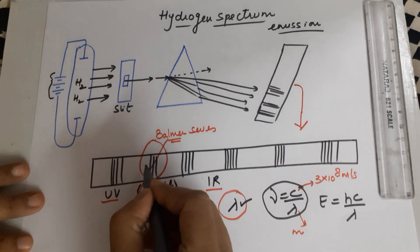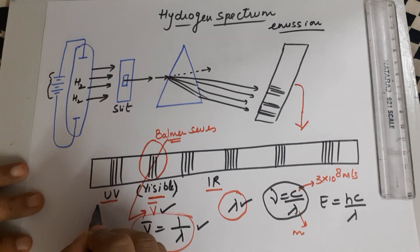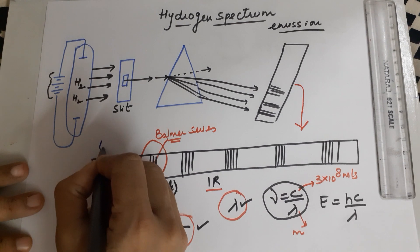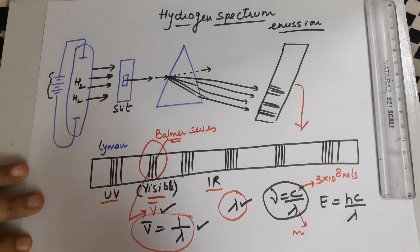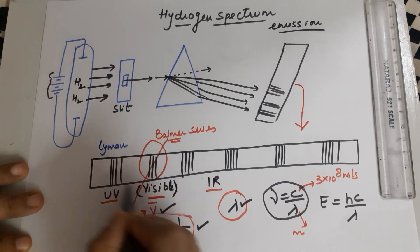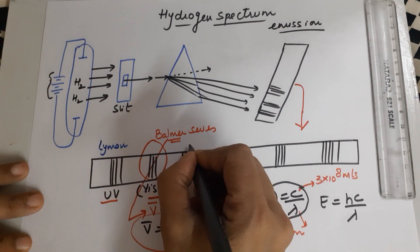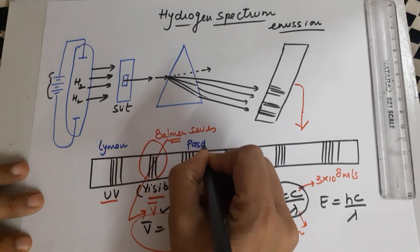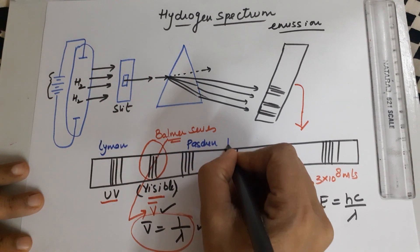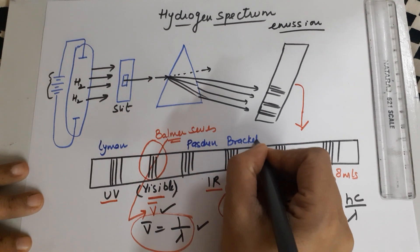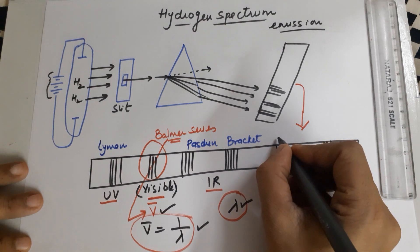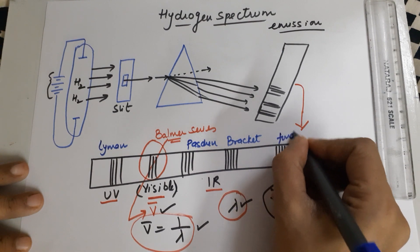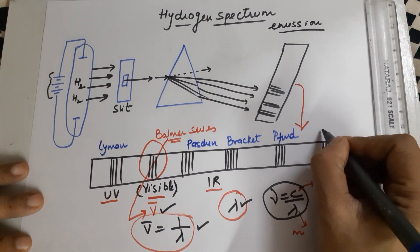After Balmer, lines were found in the ultraviolet region also, named the Lyman series. You should know the names: ultraviolet has Lyman, then Balmer in the visible, then Paschen, Brackett, Pfund, and Humphrey in the infrared.